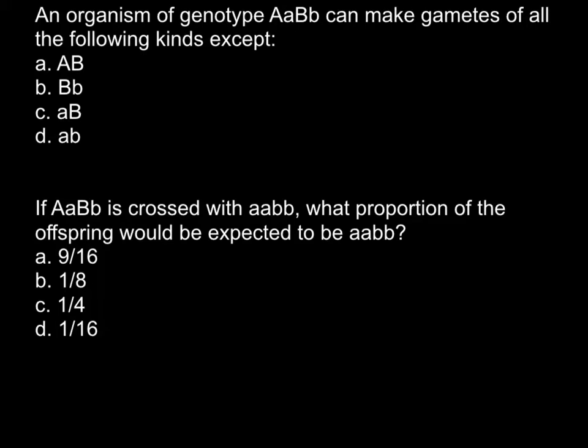When we have a diploid organism that has two alleles for each gene, the alleles can be, for example as in our example, heterozygous for gene A — so capital A and small a — and heterozygous for gene B — so capital B and small b.